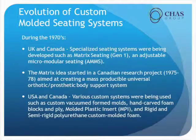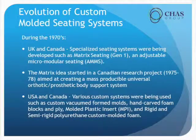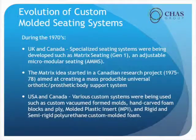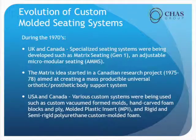During the 70s, the UK and Canada started developing the matrix system. Some of you who have been doing custom molds for quite a while probably saw some of the early models of matrix being introduced into the US. The matrix system started in Canada as a research project because they wanted to find a way to mass produce custom seating for body support systems. The matrix is your adjustable micromodular system.